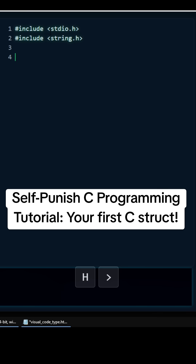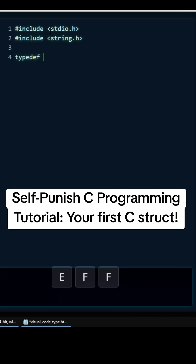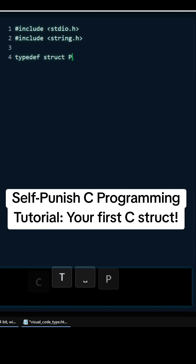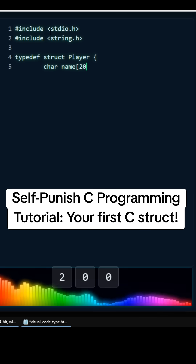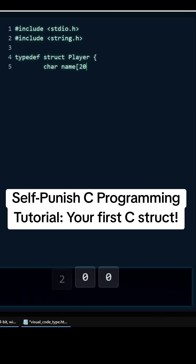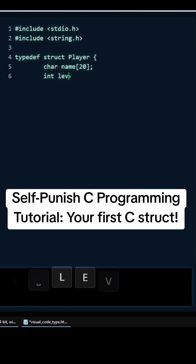So now we create our player struct. We're going to use typedef. Alright, typedef struct player, and then left curly brace. We're going to have some fields for our player. The first one is going to be the name, and the size is going to be 20 — char name[20]. And then our level is going to be an int, so we're going to type int level.